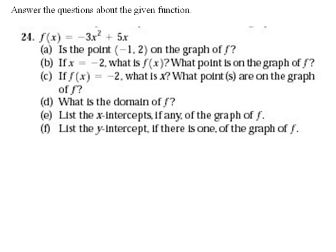Here we have f(x) equals negative 3x squared plus 5x. And part a says, is the point (-1, 2) on the graph of f? Well, keep in mind that this is a point. That's what they told us. So this x value is negative 1 and the y value is 2.